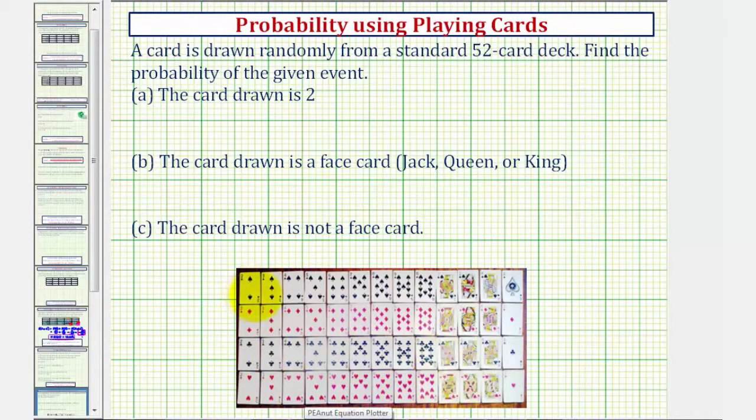There are 13 ranks, or 13 types of cards. We have the 2s, 3s, 4s, 5s, 6s, 7s, 8s, 9s, and 10s. Then we have the face cards: Jacks, Queens, and Kings. Finally, we have the Aces.